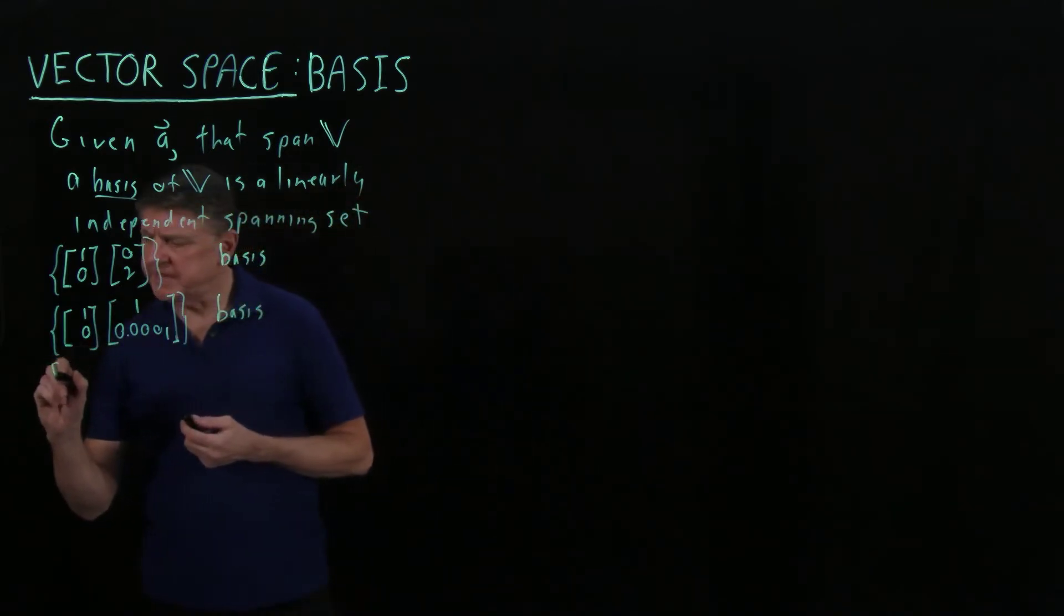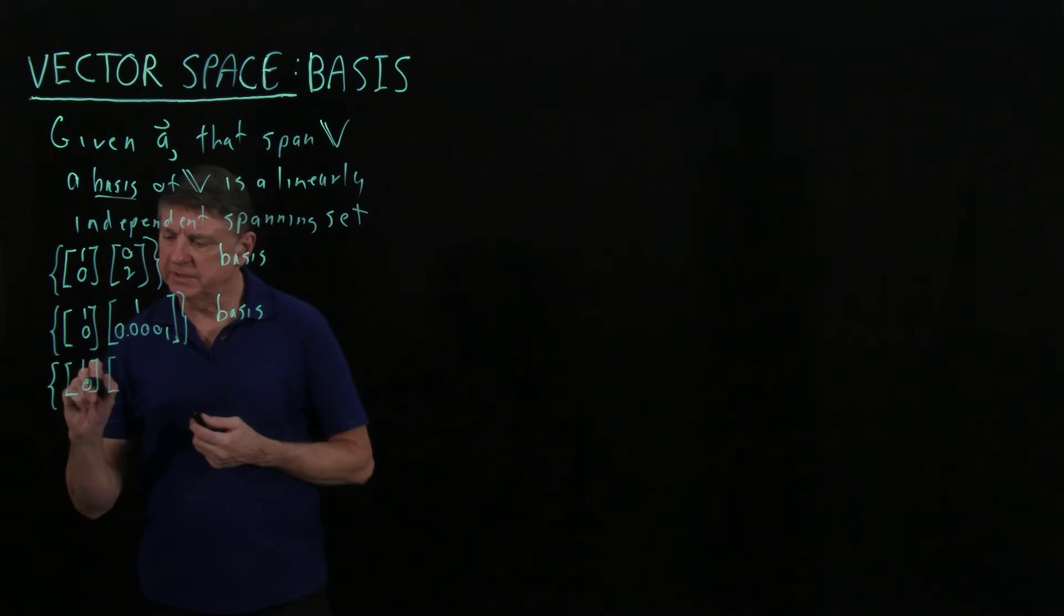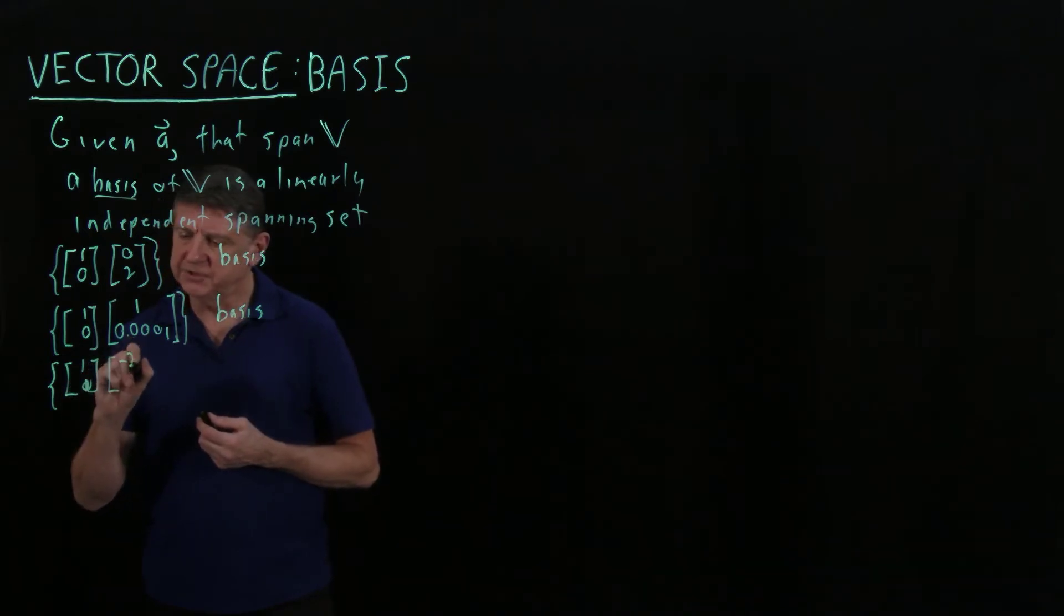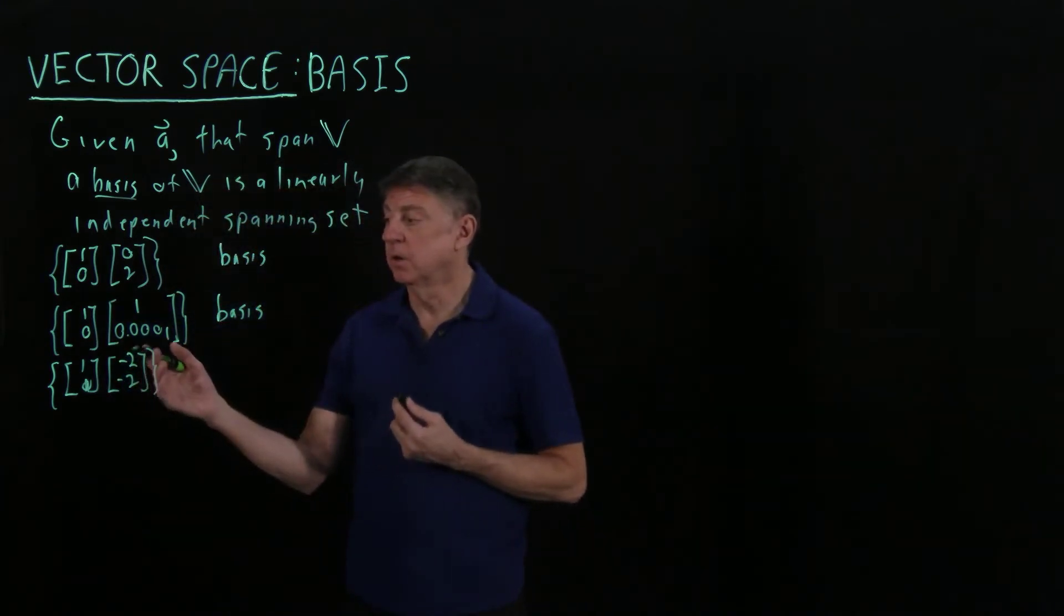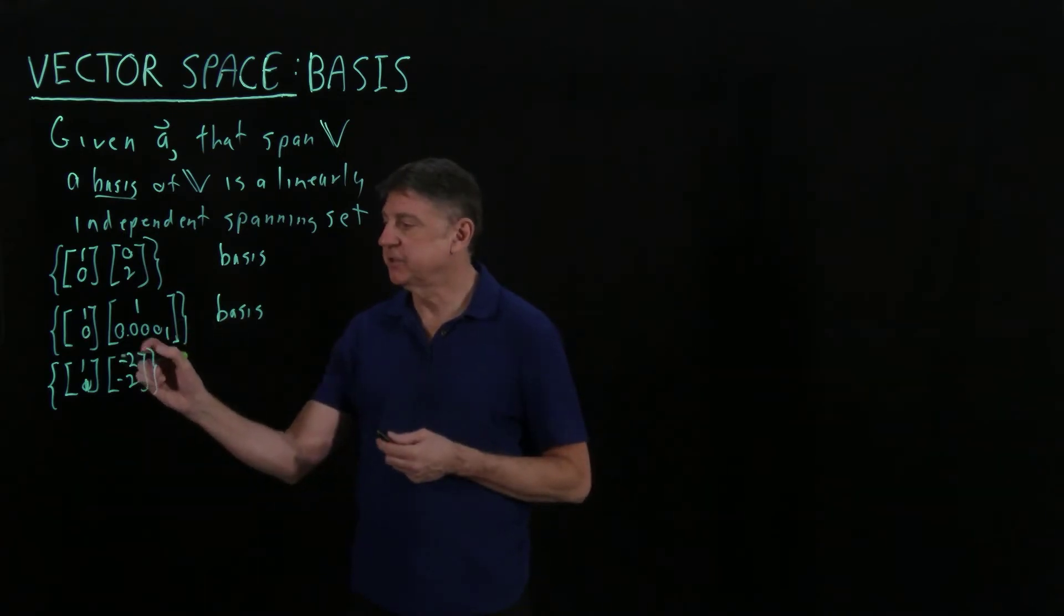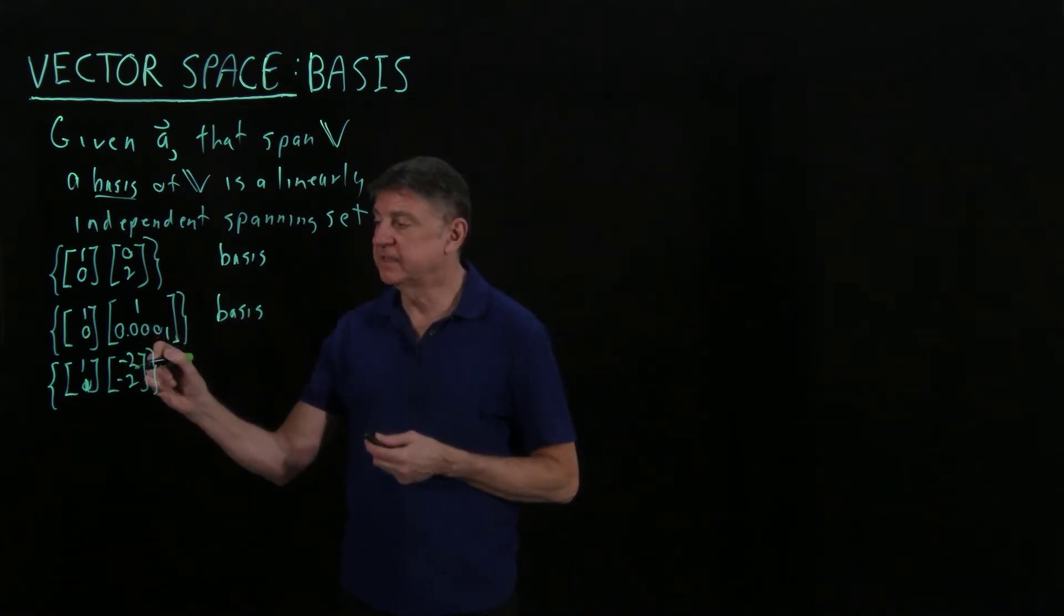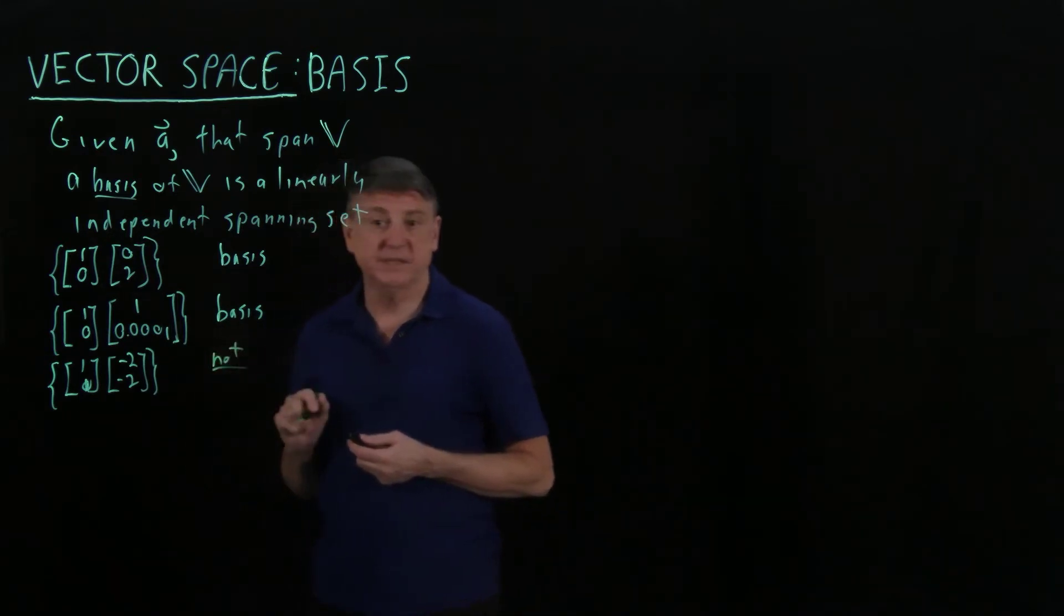Suppose our set is [1, 1] and [-2, -2]. Are these a basis for a two-dimensional vector space? And the answer is no, that this is a multiple of minus 2 times that, so that is not a basis.